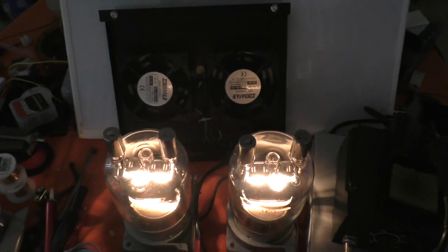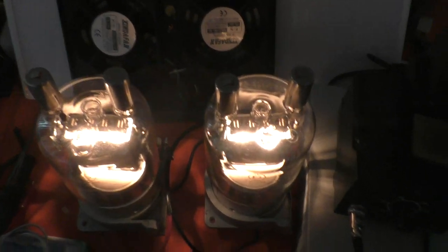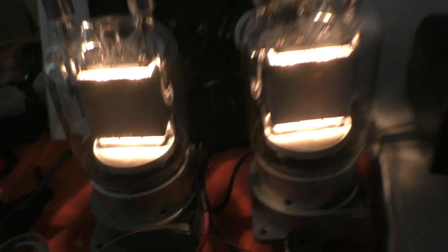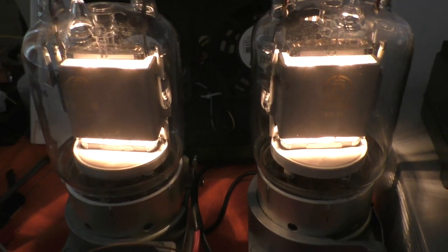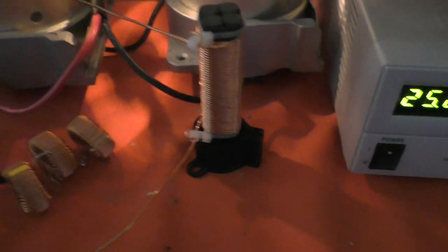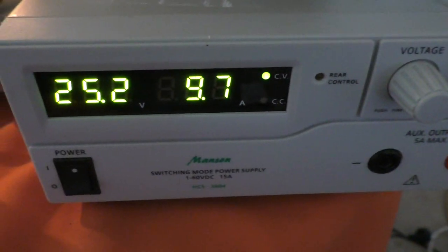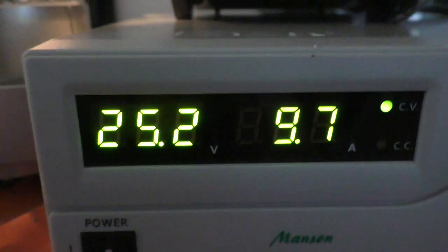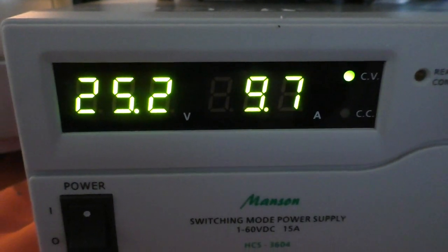There you go, so that's the GU81Ms this time being lit up with a little bit of DC. There's no HT on, they're not glowing red, that's an optical illusion. A little bit on the RF choke, and there we are, 25.2 volts, 9.7 amps.